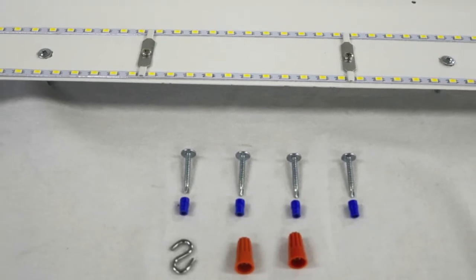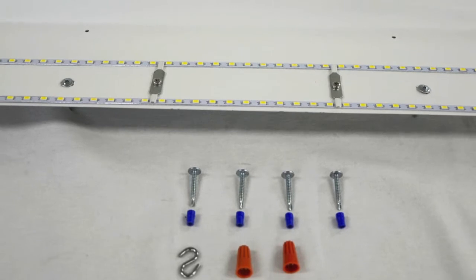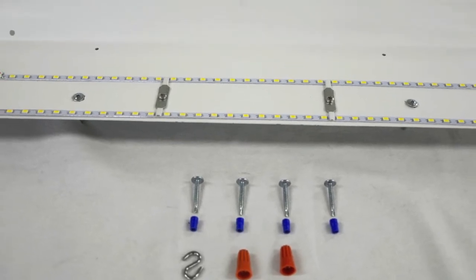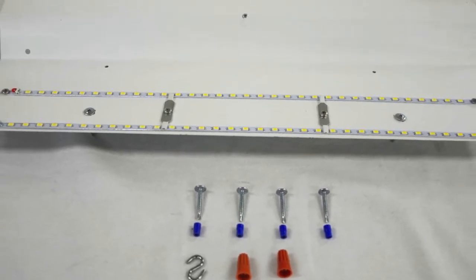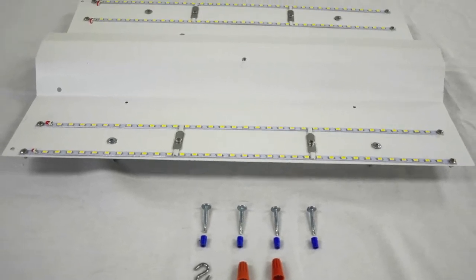Unpack the Batwing Retrofit Kit and locate all the parts, which include four spacer bushings, four self-drilling screws, the S-hook for aiding in installation, and the actual pre-wired MaxLite LED Batwing Troffer Retrofit Kit.